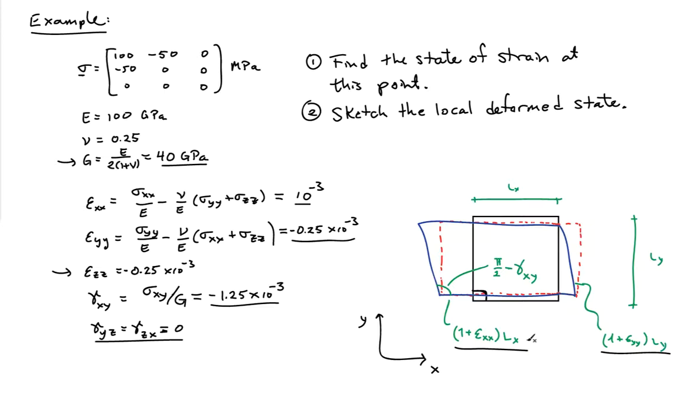And the new angle is going to be pi over 2 minus gamma xy. The angles associated with these angle changes are given in radians, and that's why I wrote pi over 2 as opposed to 90 degrees.